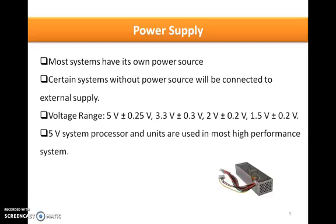The voltage ranges are listed here, which you can see on the screen. In most systems, 5-volt system processors and units will be used in order to get the best performance, because power supply has a relation with propagation delay.